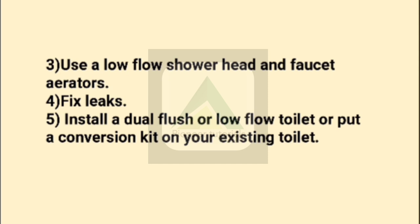Next, use a low-flow showerhead and faucet aerators. Faucet aerators reduce water pressure so less water comes out. Fourth, fix leaks — if there is a water leak at the tap, close it. Number five, install dual flush or low-flow toilets or put a conversion kit on your existing toilet.